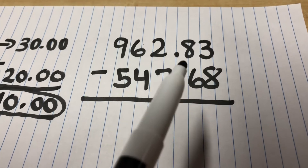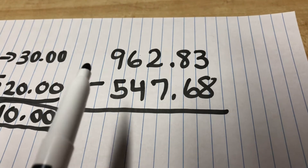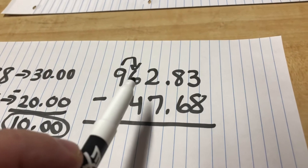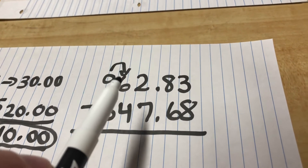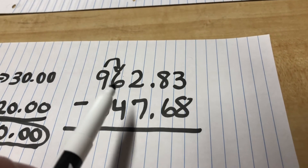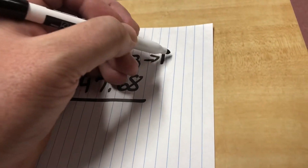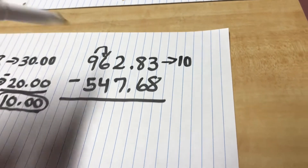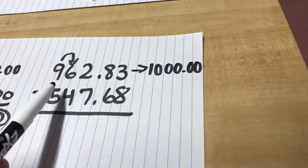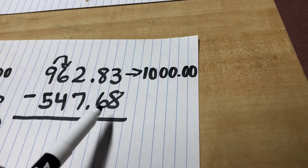Now the last one: 962 and 83 hundredths minus 547 and 68 hundredths. I'm rounding to the greatest place value, looking at the nine. The six is telling me to round up because five and higher means round up. Here's a slightly different situation — because I'm rounding up a nine, it becomes a 10. The six and two both become zeros, and I end up with 1000. Sometimes that happens — instead of three digits before the decimal, we end up with four.